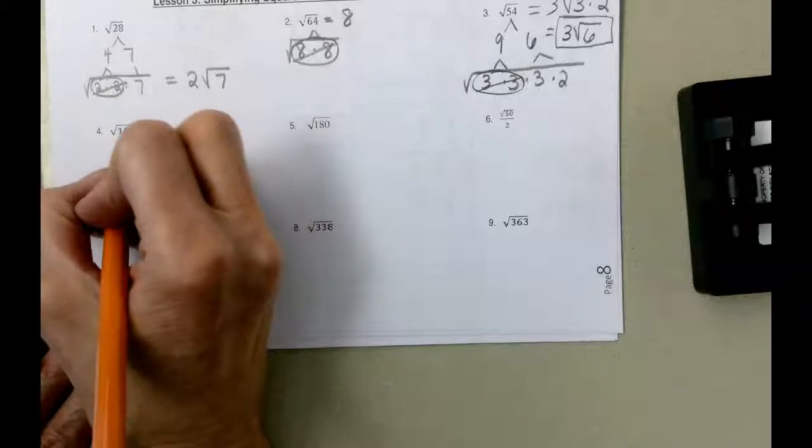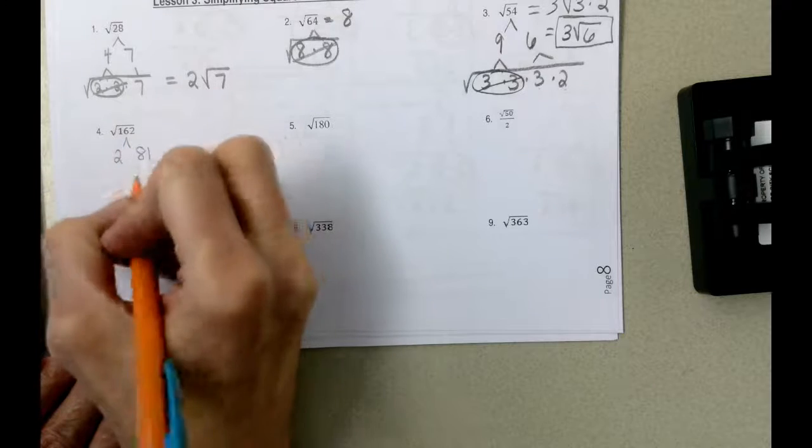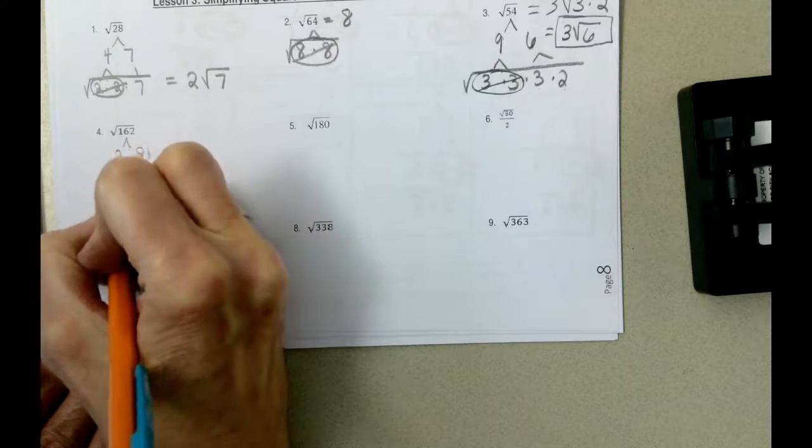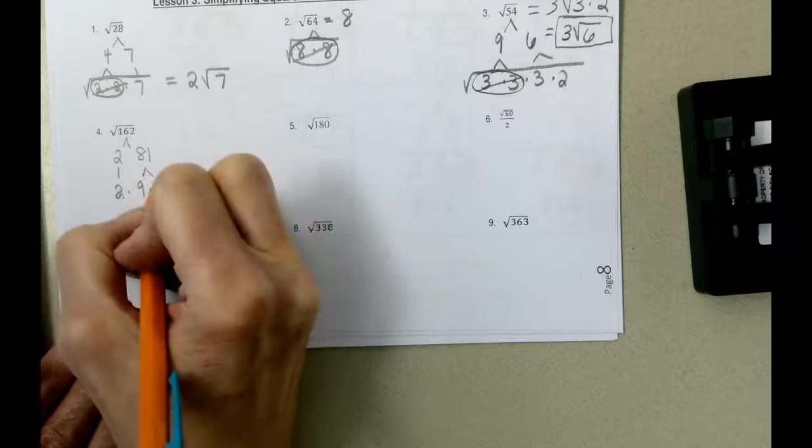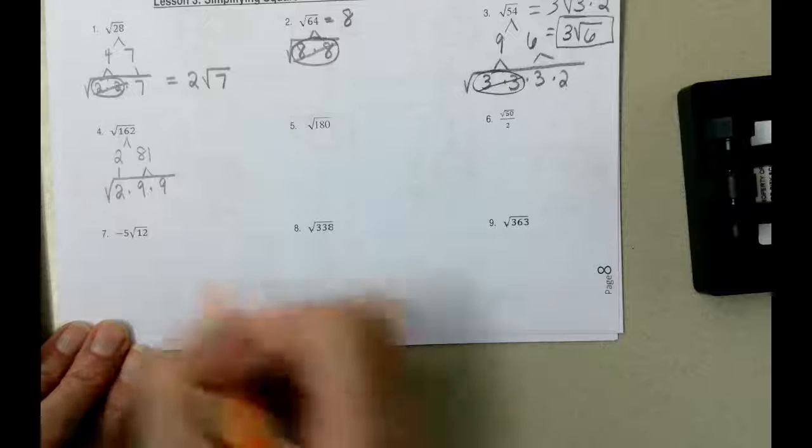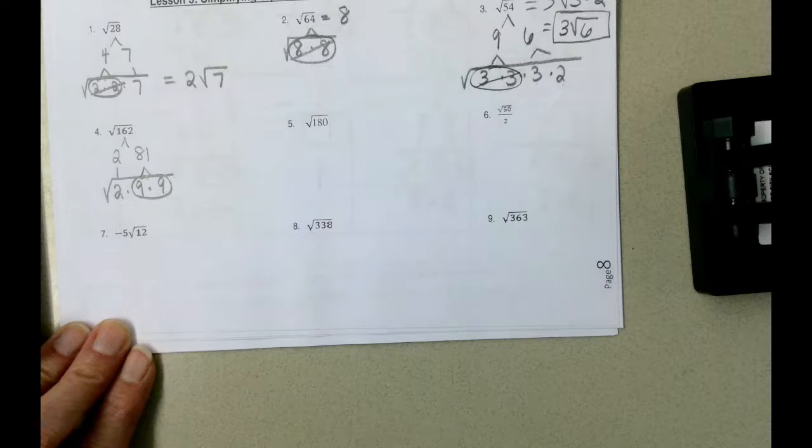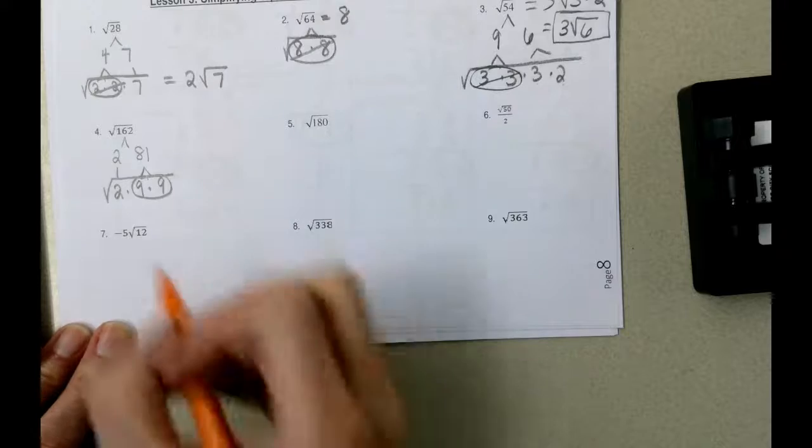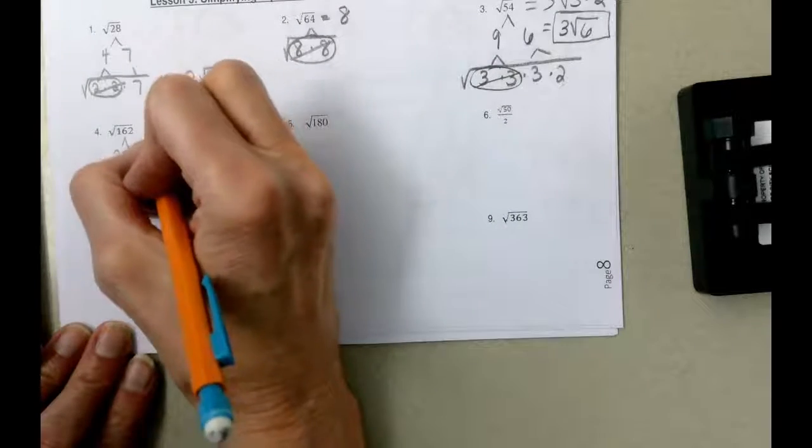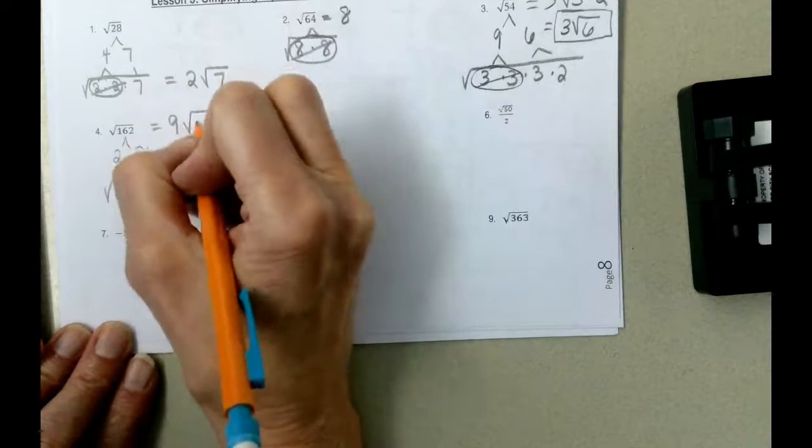Continuing to simplify, 162 is 2 times 81, 81 is 9 times 9. And again, I know that we can break down 9 times 9 quicker, but we already have 2 of the same value, so we don't really need to write 3 times 3 and 3 times 3 again. We can stick with our 9 times 9. 2 of the same value to take out 1, so we can take out one 9, and we have a single 2.